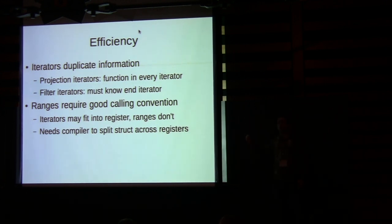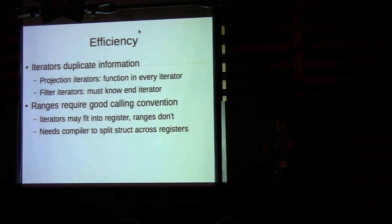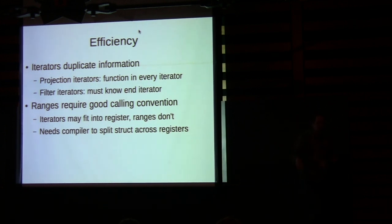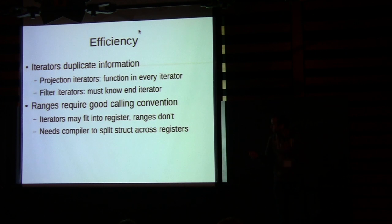If you have ranges, you need a good calling convention. A vector range consists of two pointers. A function taking two vector iterators takes two pointers — two registers, fine. But if that's a range, it's too big for one register, so you pass it on the stack, unless the compiler is smart enough to split it up into two registers. In D, they went to significant effort to ensure that happens because D's standard library uses ranges.